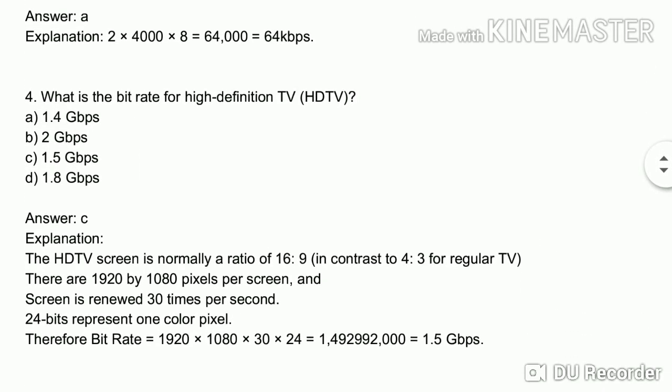Fourth question: what is the bit rate for high definition TV? HD TV has a normal ratio of 16:9, compared to regular TV at 4:3. The HD TV screen has 1920 × 1080 pixels per screen — width is 1920 pixels and height is 1080 pixels. The screen refreshes 30 times per second.